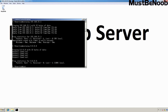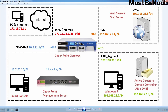Let me show you the topology image again. In this lab guide, I am using the 172.18.72.0 network as a public IP address. To test Static NAT, I have created one more virtual machine with the IP address 172.18.72.11, which I am using as a computer from the internet.